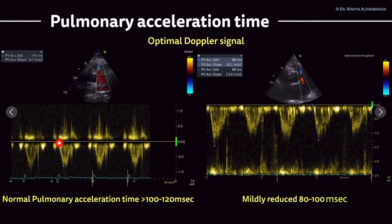If the Doppler signal is optimally aligned, you can also perform optimal measurements. Sometimes it's not that clear, so you have to perform several measurements or just save several beats to measure it multiple times. In this case, again, you see a normal pulmonary acceleration time.